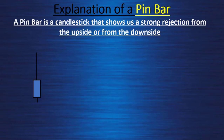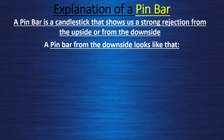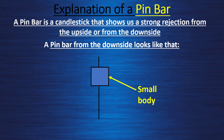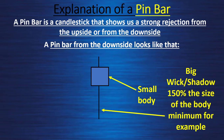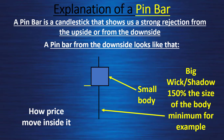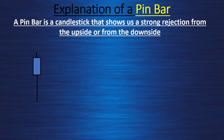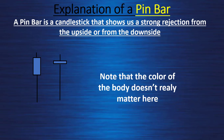Other types of rejection from the upside: the pin bar can look different with a different shape of the body. A pin bar from the downside has the same small body but a very big wick or shadow rejecting the downside direction, showing us a strong level of support. Price starts above the middle, goes all the way down, and rejects all the way up before finishing around the high. Note that the color of the body doesn't really matter here — what matters is the side of the wick, showing a very strong rejection.